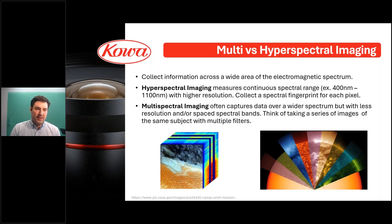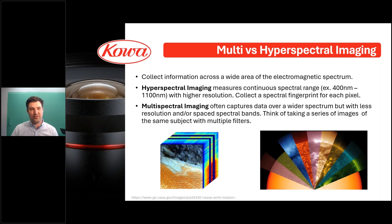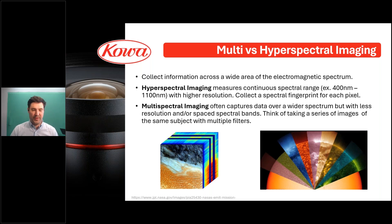So multi- and hyperspectral imaging — I'd like to talk about the basics and the differences between the two. While they're both used to collect information across a wide area of the electromagnetic spectrum, hyperspectral imaging typically measures a continuous spectral range — for example, 400 nanometers to 1100 or further — with high resolution, collecting a spectral fingerprint for each pixel. Multispectral imaging often captures data over a wider spectrum but with less resolution and more spaced-out spectral bands, essentially taking a series of images of the same object with multiple filters.